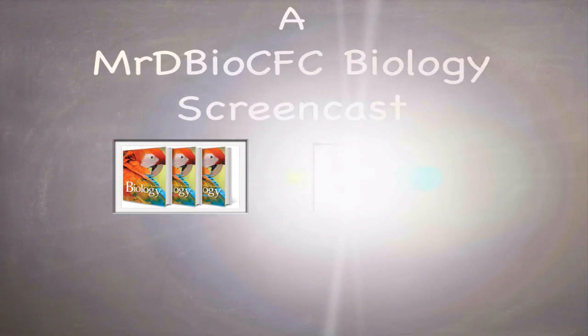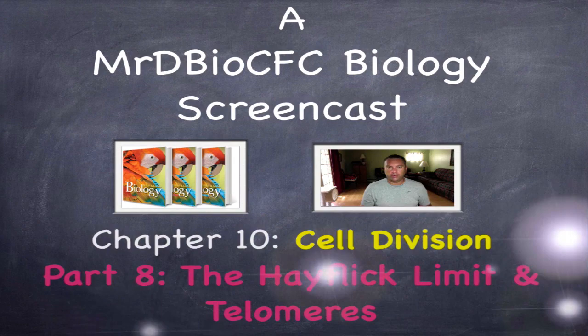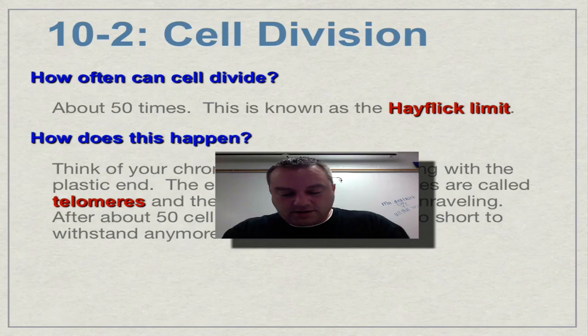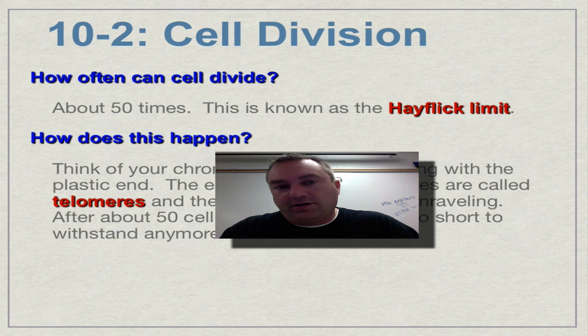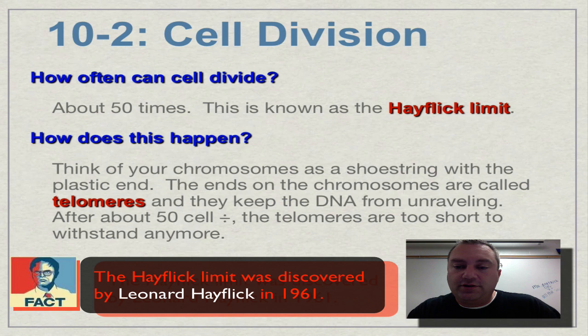Welcome to episode 8. In this episode we're going to discover how often a cell can divide. It can basically only divide about 50 times, and this limit of 50 cell divisions is known as the Hayflick limit. How does this Hayflick limit occur? It has to deal with a structure on a chromosome called a telomere.